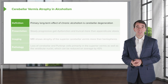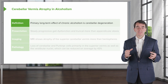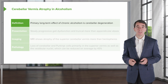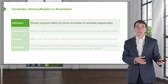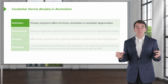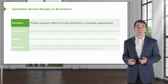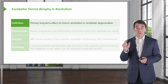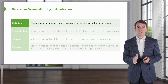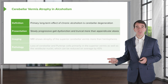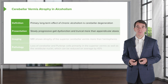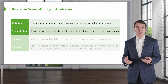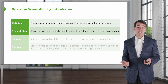Let's talk more about cerebellar vermis atrophy and alcoholism — this is the clinical relevance of understanding how the cerebellum is organized. This is a primary long-term effect of chronic alcoholism, resulting in degeneration or atrophy of the cerebellum. The entire cerebellum is involved, and alcohol has a predilection for affecting the cerebellar Purkinje fibers, but the superior vermis is most specifically affected and often one of the earliest areas. Patients typically present with slowly progressive gait dysfunction and truncal ataxia, as the vermis is involved in truncal coordination.